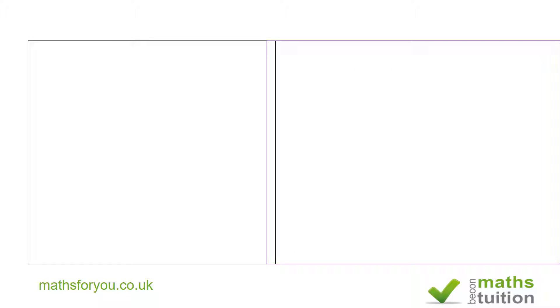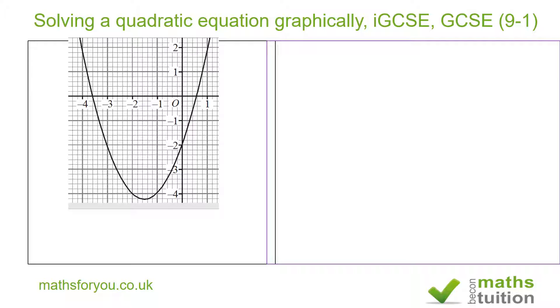Hello and welcome to this exercise in which we try to solve a quadratic equation graphically, an IGCSE GCSE type question requested by a subscriber. Now here we've got a graph and it says the grid above shows the graph of y is equal to x squared plus 3x minus 2.